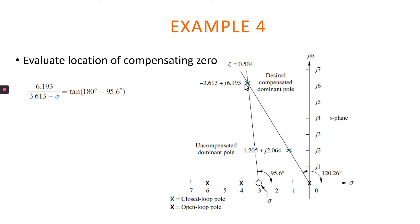From the calculation of angular contribution from the compensated dominant pole, negative 3.613 plus j6.193 and also the same damping ratio 0.506. So this is the theta ZACC that we determined from our previous calculation, 95.6 degrees.